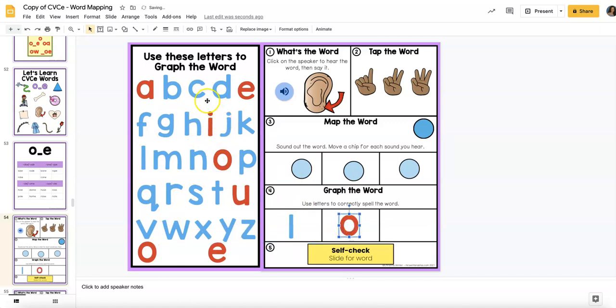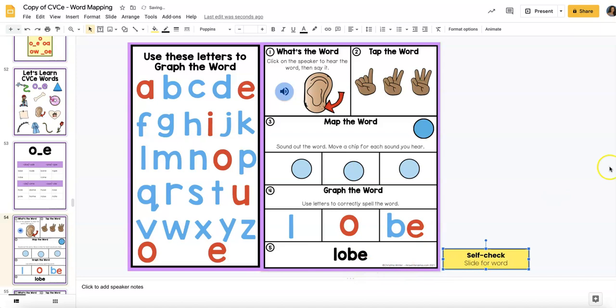Now the silent E doesn't make a sound. So what we're going to do and how you teach it, different teachers teach it a little bit differently, but we can keep the B and the E together because the E makes the O say the long O sound. And then we can check our word to see if we have it correctly. So this would be the independent digital activity students can use.